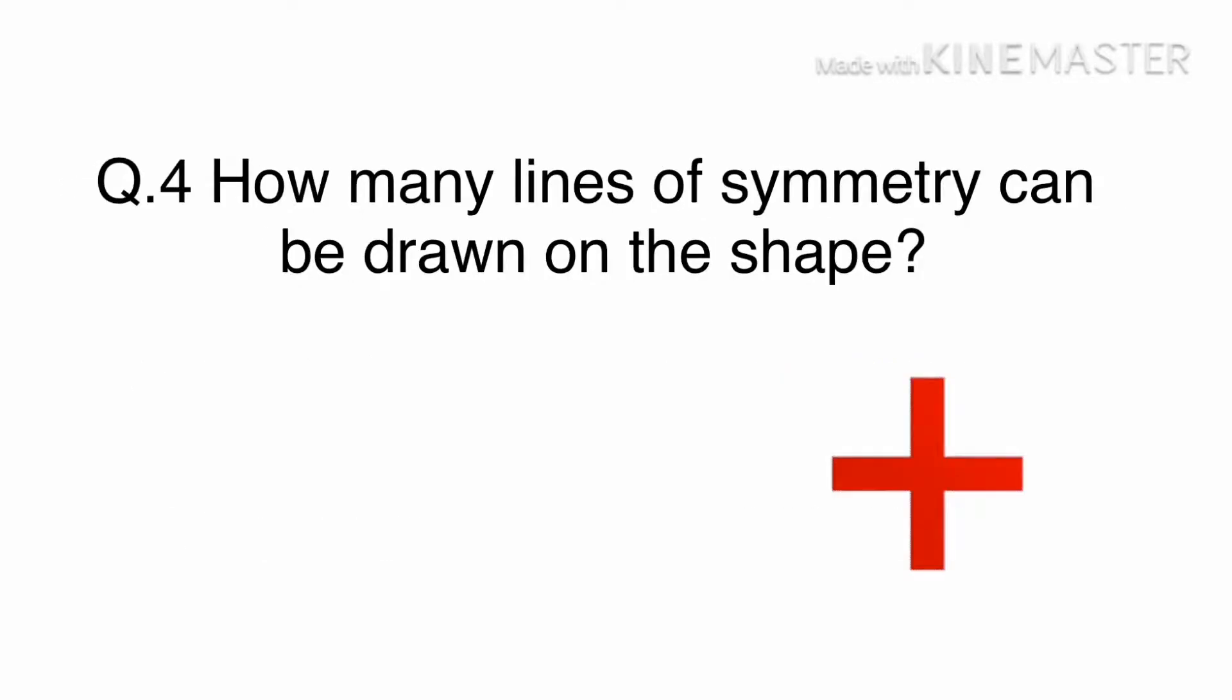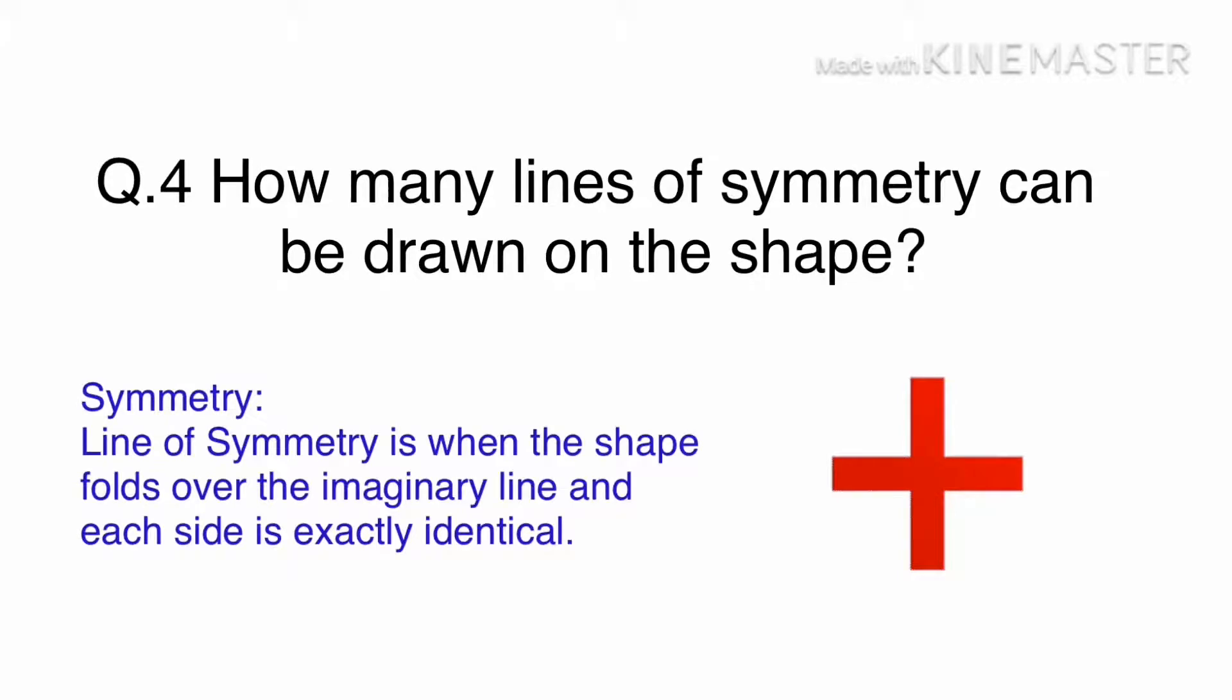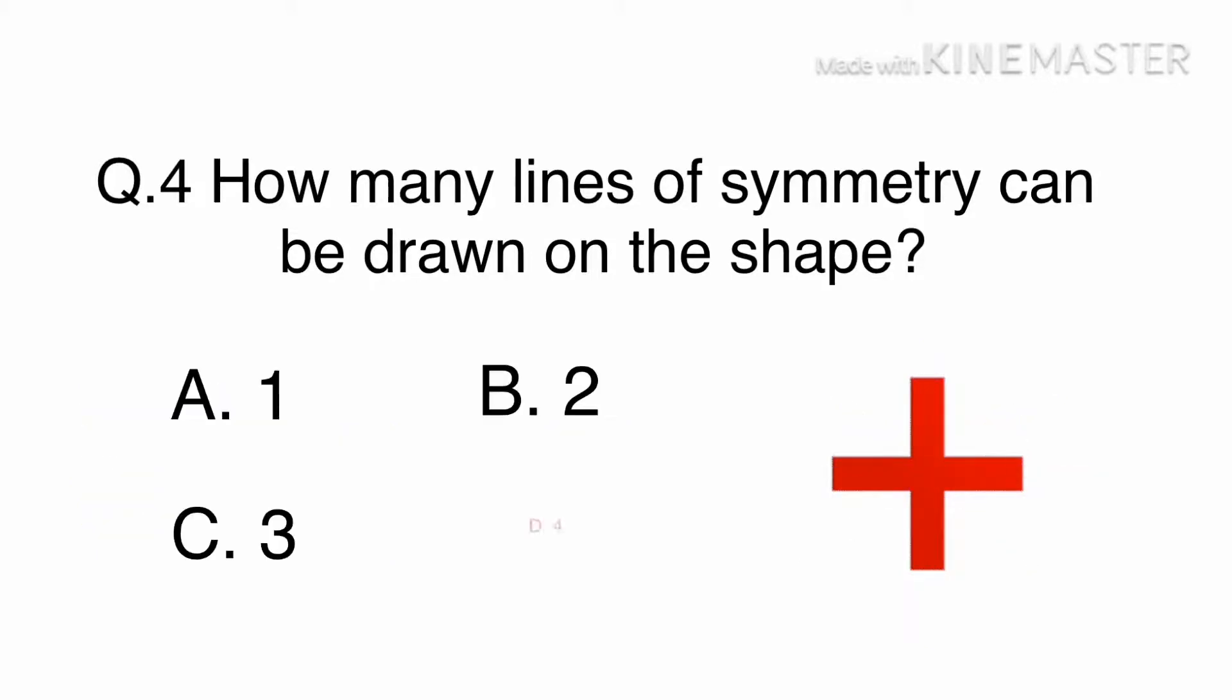Question 4: How many lines of symmetry can be drawn on the shape? A. 1, B. 2, C. 3, or D. 4. A line of symmetry is when the shape folds over the imaginary line and each side is exactly identical. In this shape for the question, you can see 4 lines of symmetry. The answer is D, 4.